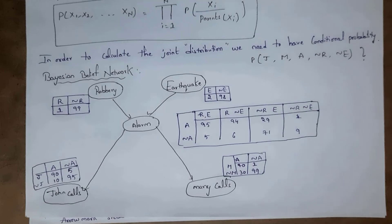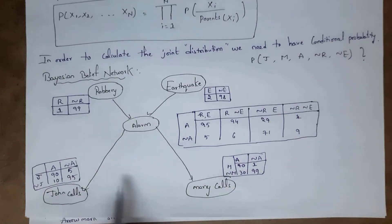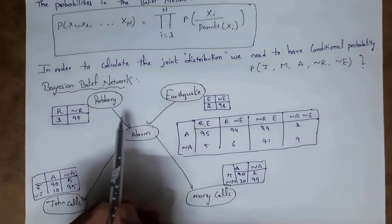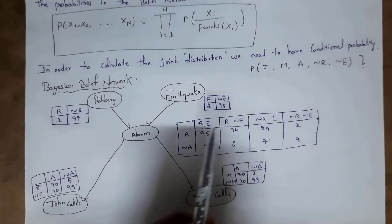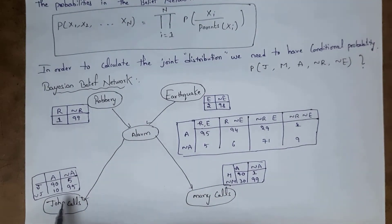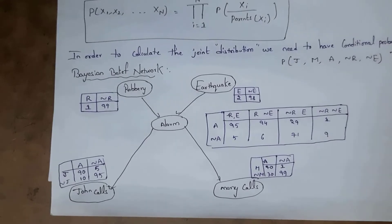Here is an example Bayesian Belief Network containing a Directed Acyclic Graph and a Conditional Probability Table. The meaning of this graph is: whenever a robbery or earthquake occurs, an alarm will ring. When the alarm rings, John and Mary call the police.